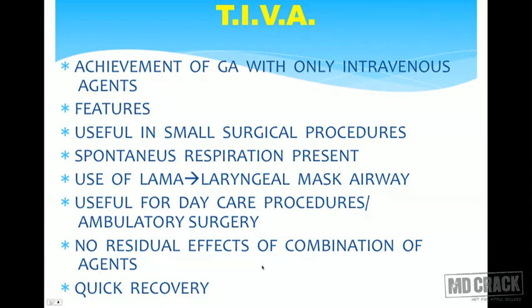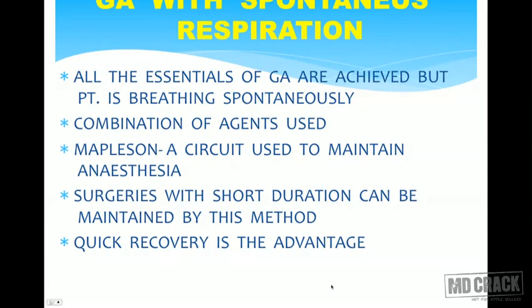TIVA is used for daycare procedures and ambulatory surgeries, with advantages of no residual effects and quick recovery. The second type is GA with spontaneous respiration, where all goals of GA — loss of consciousness, analgesia, and amnesia — are achieved while the patient breathes spontaneously. A Mapleson A circuit is used to maintain anesthesia, and it is suitable for short-duration surgeries with quick recovery.